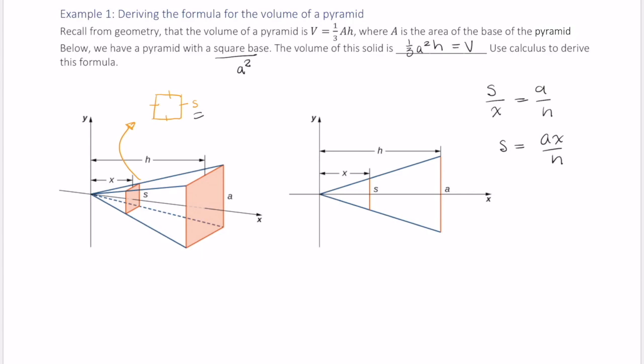That's fantastic. That means the area of this cross-section can be rewritten in terms of x, and that area, A(x), is equal to ax over h quantity squared. And again, that's because the area of a square, in this case, area of this square with side s is equal to s squared.